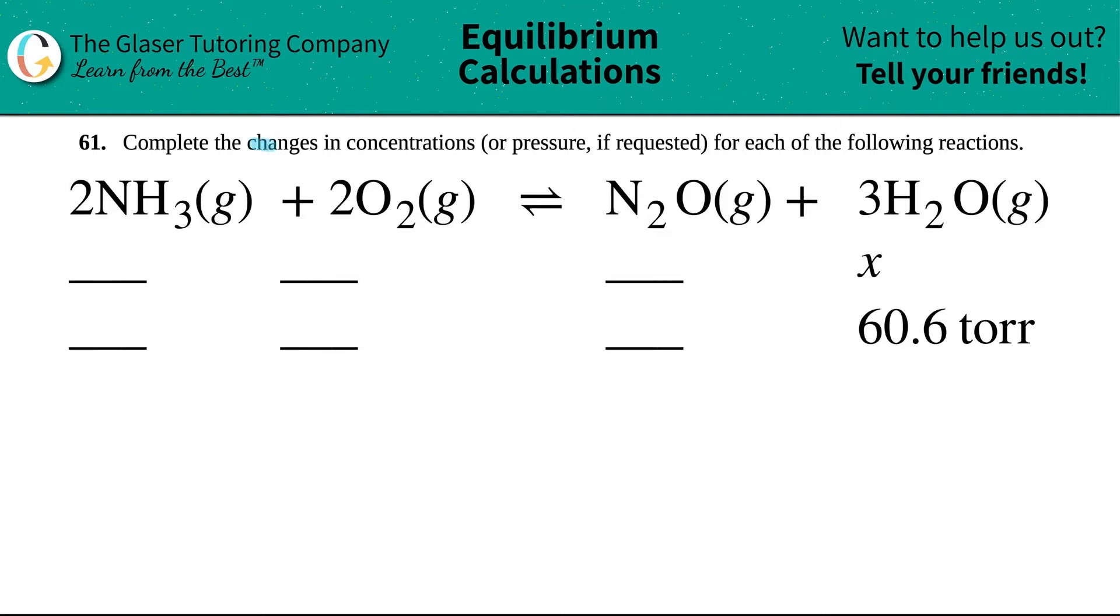Number 61, complete the changes in concentrations or pressure, if requested, for each of the following reactions. Then we have this balanced equation right here. So we have to find the change in the pressure of 2NH3 gas plus 2O2 gas, which comes to equilibrium with N2O gas plus 3H2O gas. Now I say that we have to find the change in the pressure because I see that they gave me a unit of torr. Torr is a unit of pressure. So we're not dealing with concentrations here, we're dealing with pressures.